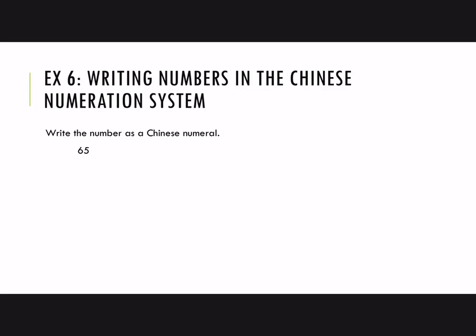I'm going to write this vertically, so this would be 6 tens and 5 ones, but we don't need the symbol for 1. And then we write the Chinese symbols for those. And there it is. This would be the Chinese numeral.